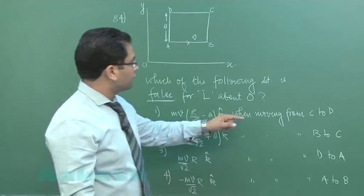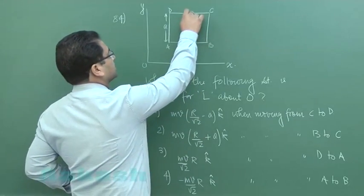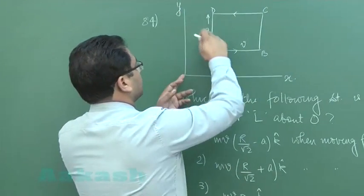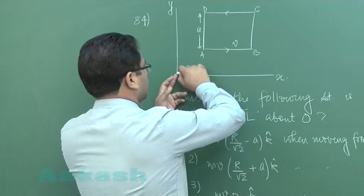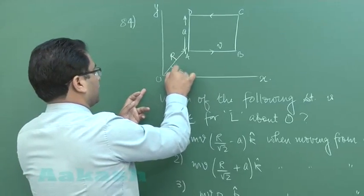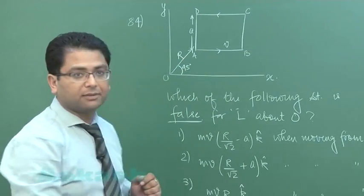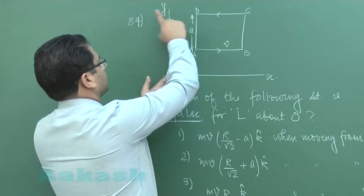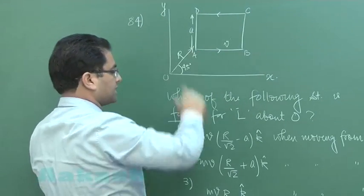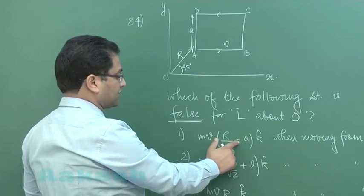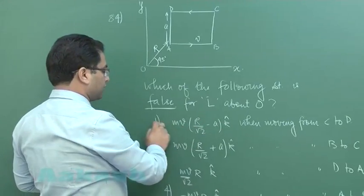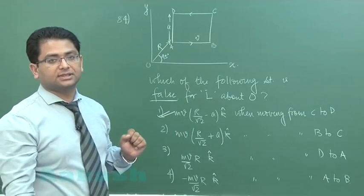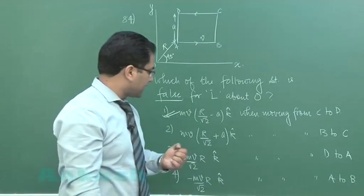When it is moving from C to D, let us first see the angular momentum magnitude that would be MV into perpendicular distance is R by root 2 plus E, but here the distance itself is written in minus form so this is wrong value and we need to choose the false so that's the case. Unfortunately for this particular question there are two options.